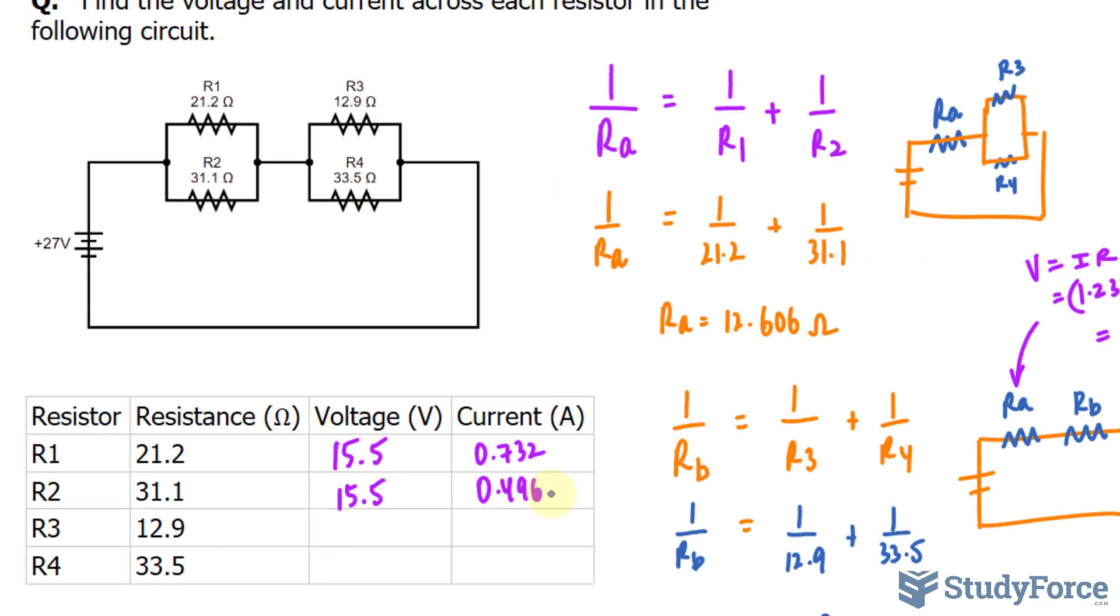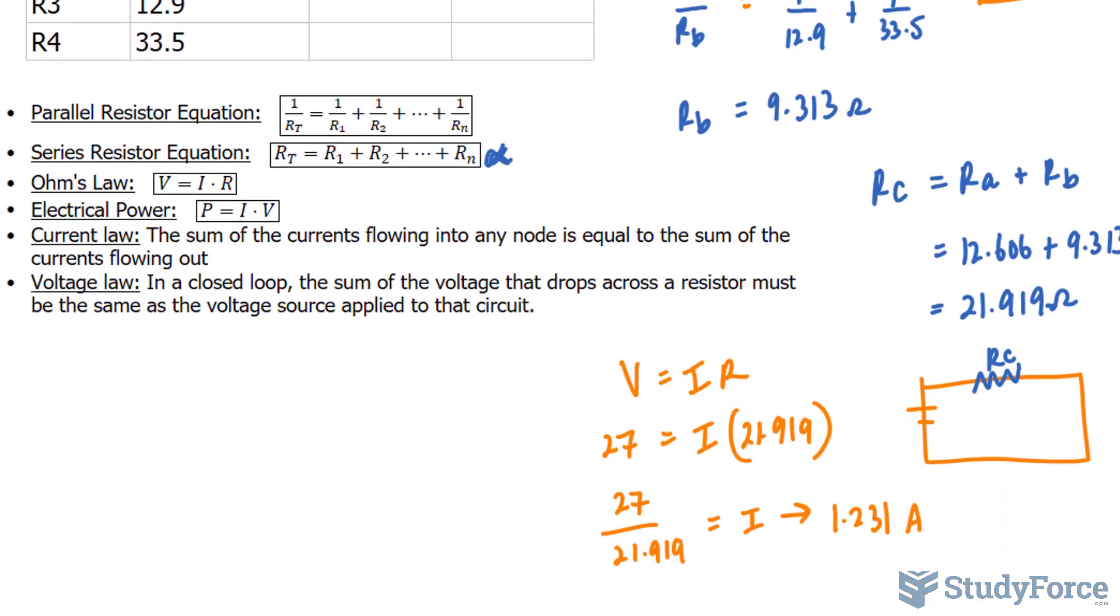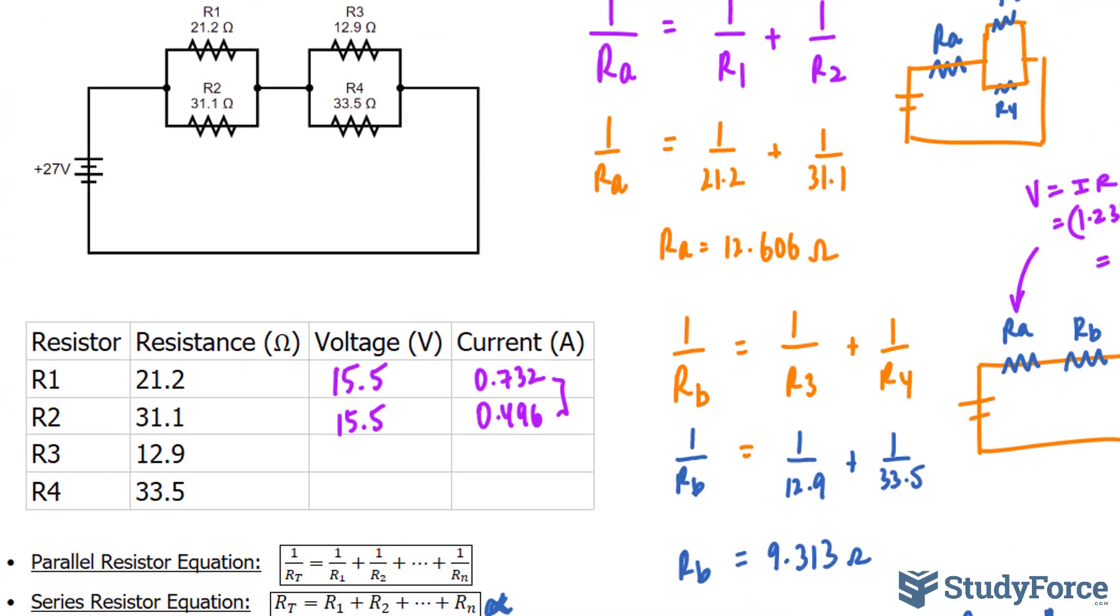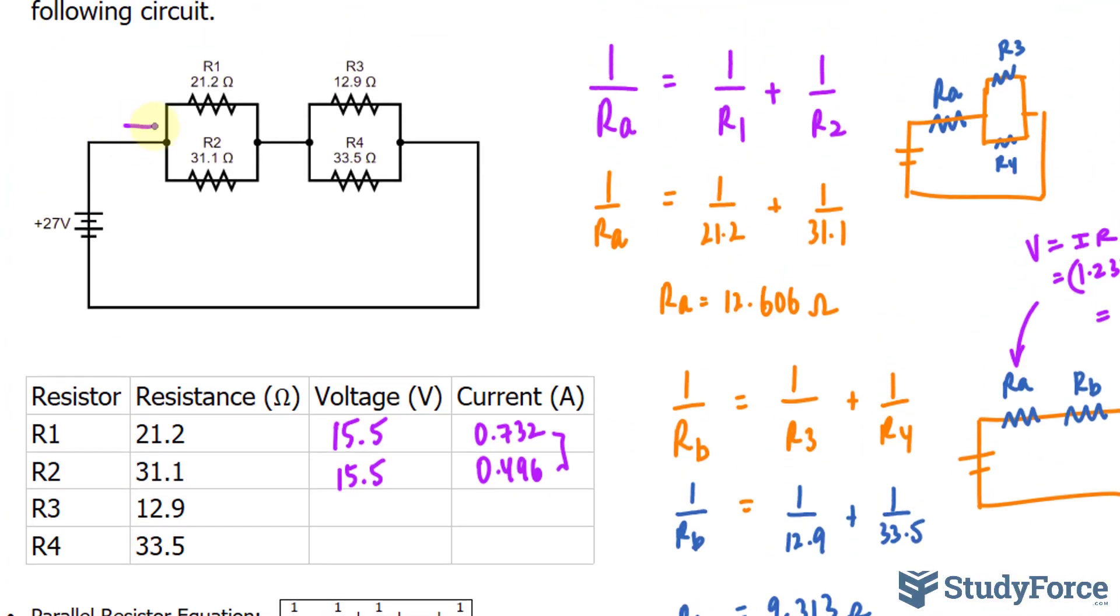Notice something that's very interesting here. When you add up these two values, you end up with the current that we found earlier as 1.231. And there's a reason for this. The current law says that the sum of the currents flowing into any node is equal to the sum of current flowing out. So, if 1.2 amperes is flowing into this node, then the same value should be flowing out through here. And this is why, when you add them up, you get the same as what you started with.